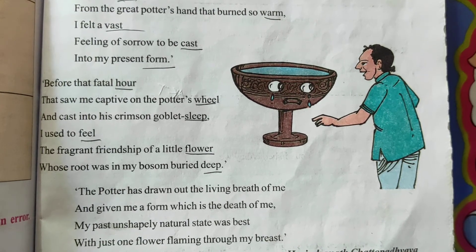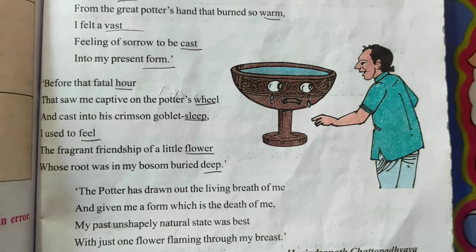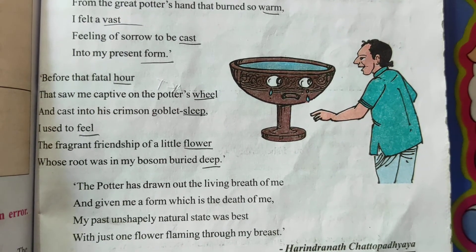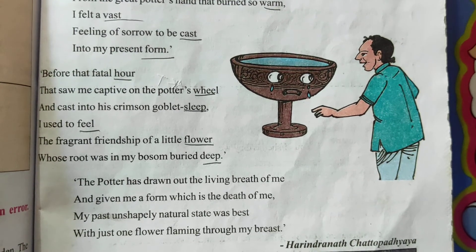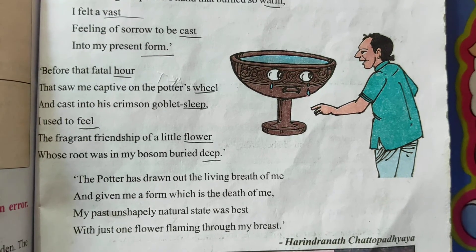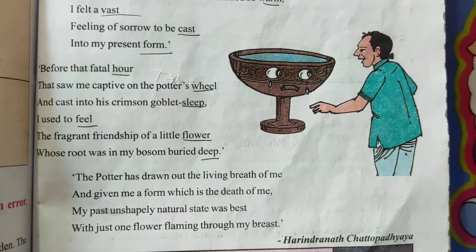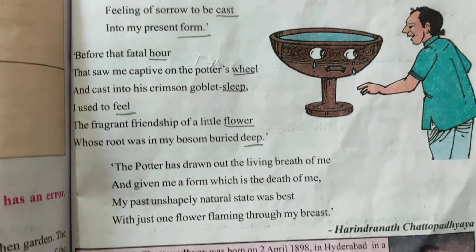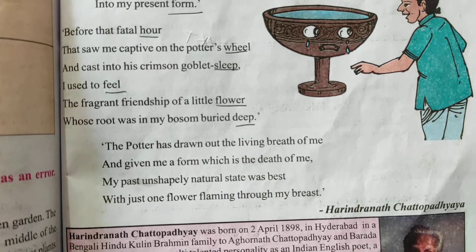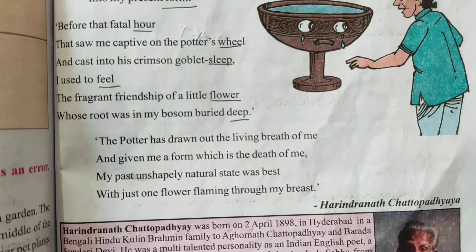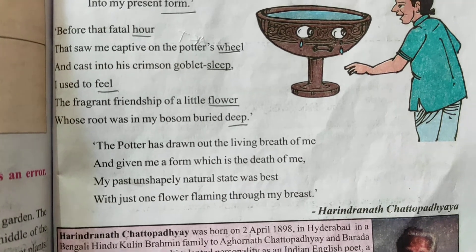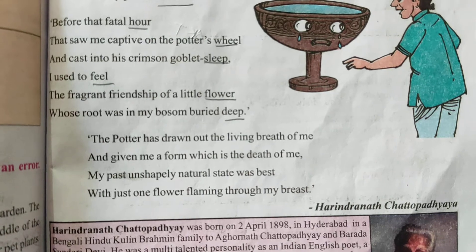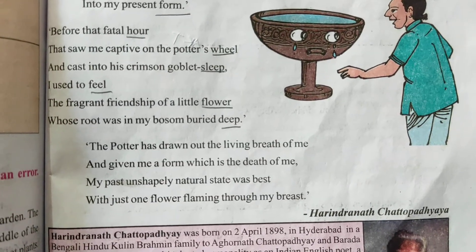When the clay was still soil, it had a friendship with a single flower. The soil wanted to sleep in the fragrant friendship of that little flower. 'Bosom' here means surface, or very intimate closeness. The flower's root was buried very deep in its surface, showing great intimacy. The flower gave a sweet fragrance, and the clay was very happy in that state — not wanting to become a goblet or pot.